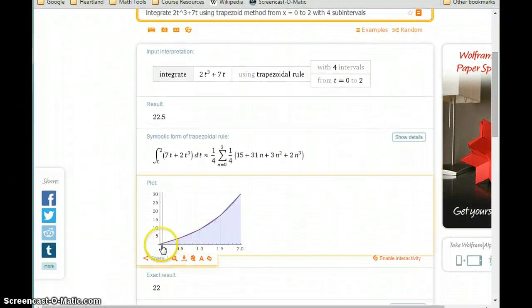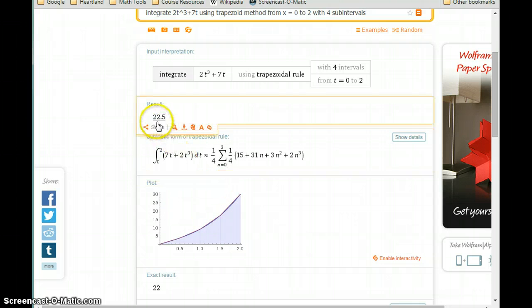Wolfram Alpha is going to give us that picture of how it's creating those trapezoids, so a slightly better representation. We can see almost no difference between the top of those trapezoids and the curve. There is some amount of error, but we're getting an approximate value for that integral of 22.5.